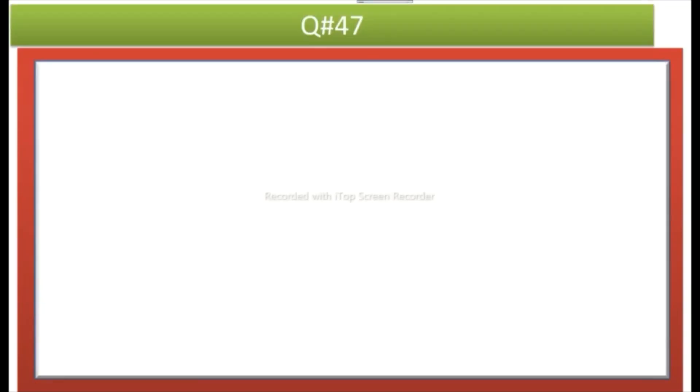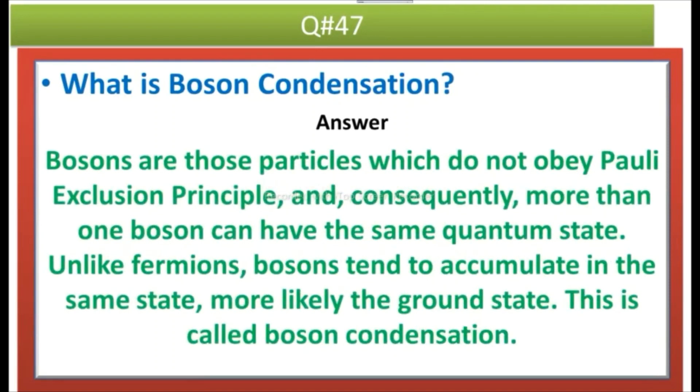The next question is what is boson condensation? It is a very important question. Answer: Bosons are those particles which don't obey Pauli exclusion principle and consequently more than one can have the same quantum state, unlike fermions. Bosons tend to accumulate in the same state, more likely the ground state. This is called boson condensation.